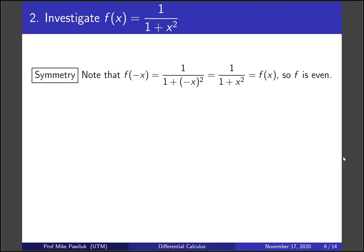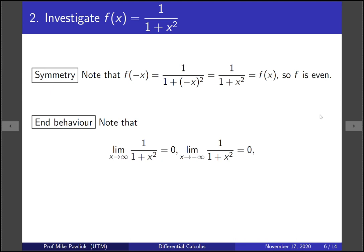For symmetry, if you plug in minus x, the minus x squared simplifies to x squared, so that's just the original function. Since f of minus x equals f of x, f is even — it has symmetry about the y-axis. Finally, for end behavior, looking at the limit as x goes to infinity or minus infinity, in both cases it's 0, because it's 1 over a very large number.